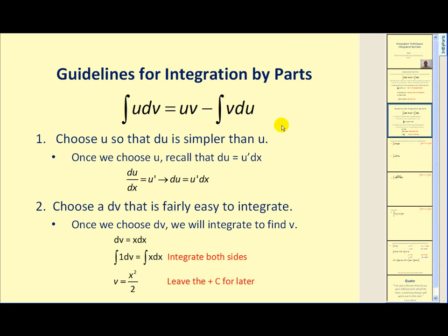The guidelines for integration by parts are as follows. We have to assign part of the integrand to u and the remaining part to dv. We want to choose a u so that du is simpler than u. Once we choose u, we are going to have to find du because it's part of the formula. Remember that du would equal u prime times dx.